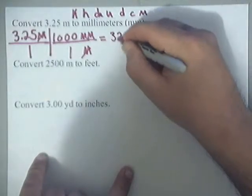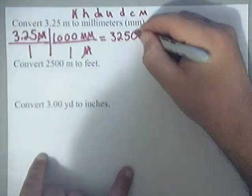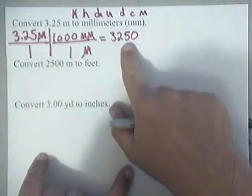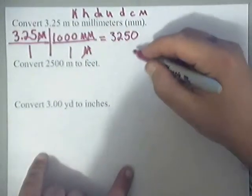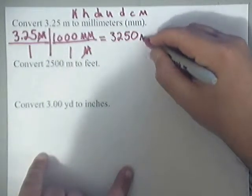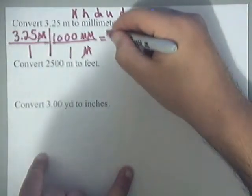Well, 3.25 times 1,000 is 3,250, and believe it or not, that is still three sig figs. So, our answer is 3,250 millimeters. Box it in.